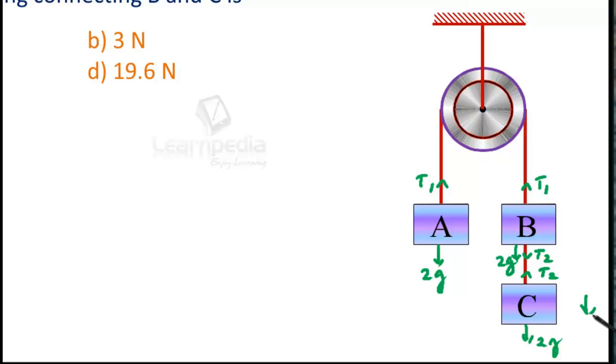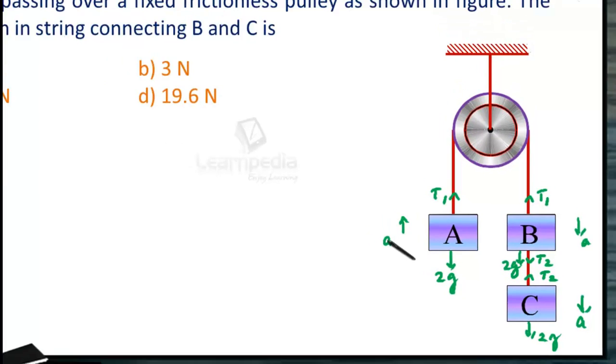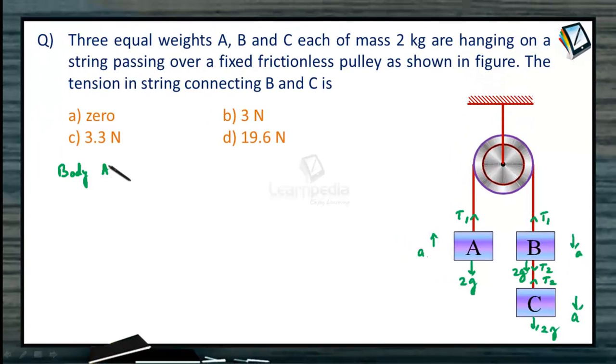Imagine this is coming down with acceleration A. Since it is a connected body, this will also have acceleration A. This body also will have acceleration as A. So, for body A, the equation we can write is T1 minus 2g is equal to 2A. Equation 1.